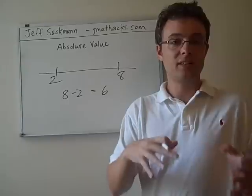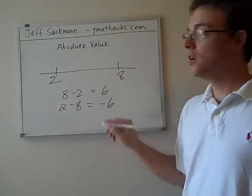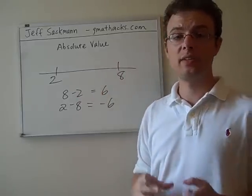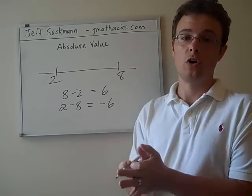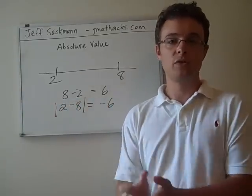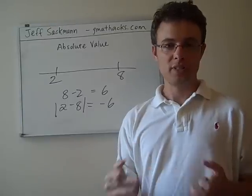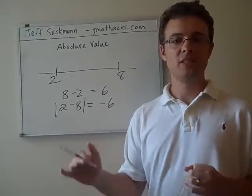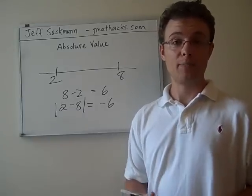But let's say you're working with some more complicated equations and the end result is 2 minus 8, which gives you minus 6. You're still looking for a distance, the distance between point A and point B. And because in the real world distance is never negative, we never say negative 6 miles or negative 6 inches. Because distance is always positive, absolute value is just our way of saying we only care about positive numbers here.